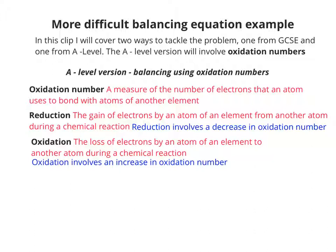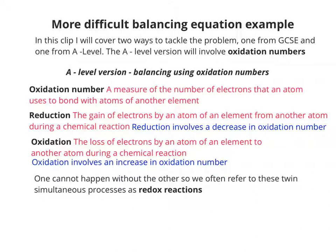So during those processes, you'll have a change in the oxidation number. So during a reduction, there'll be a decrease in the oxidation number. During oxidation, there'll be an increase in oxidation number. So one can't happen without the other, so we usually refer to these simultaneous processes as redox reactions.